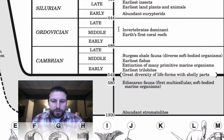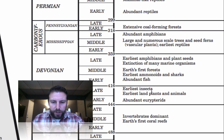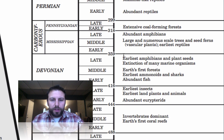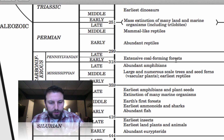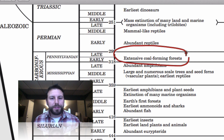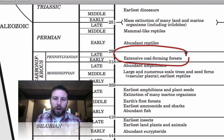In the Phanerozoic, you can see a huge amount of change — life is changing as we go through. Invertebrates dominate, we get Earth's first coral reefs, and trilobites are an important fossil we can see at the bottom. Moving up, we get abundant fish, insects, and sharks — you can see the timeline of organisms, some of which are still around today. Then we have extensive coal-forming forests, where huge amounts of carbon from dead plant material got buried and eventually formed the coal we use today.